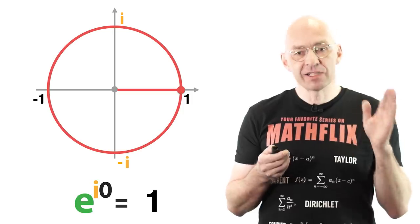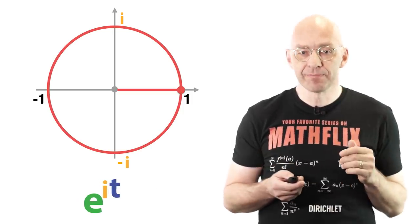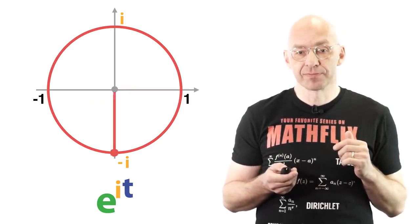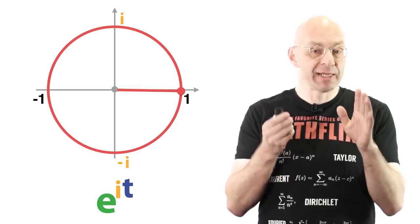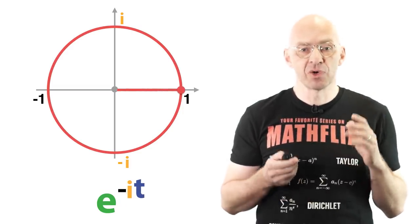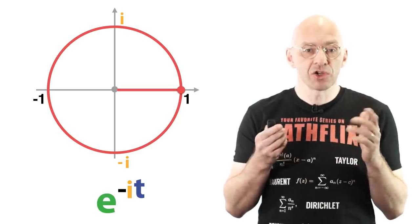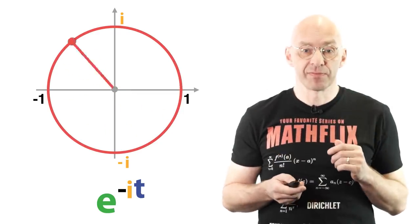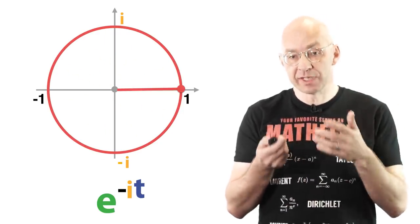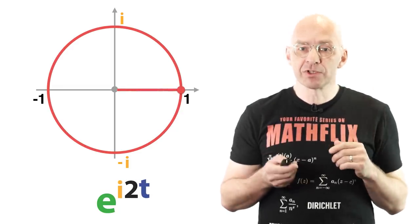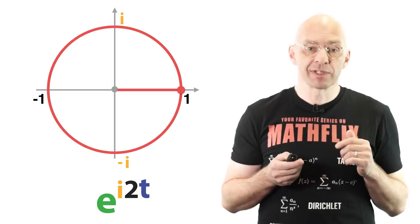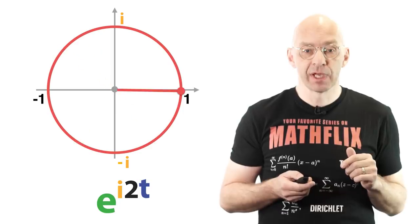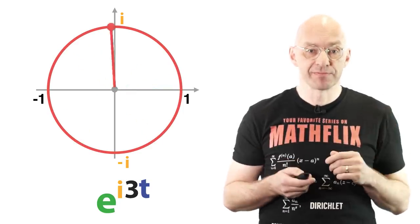Just to say it again, as we let t go from 0 to 2π the red point travels around the unit circle once in the counterclockwise direction. Now let's write minus t instead of t. So e^(-it). This corresponds to traversing the circle once in the opposite, the clockwise direction. And if we write 2t instead of t, this corresponds to traversing the circle twice in the counterclockwise direction as t goes from 0 to 2π. And if you write 3, three times. And so on.